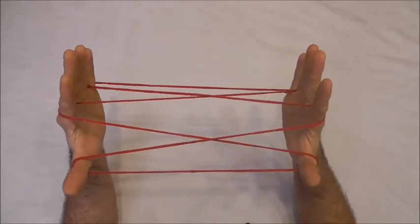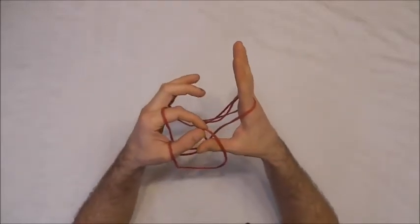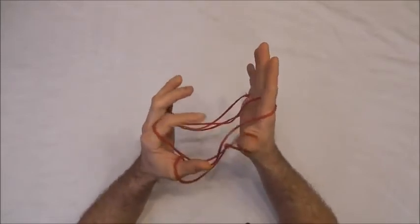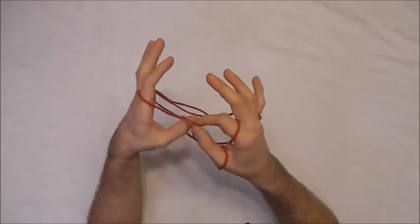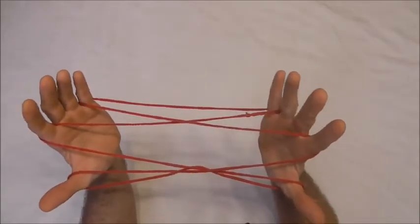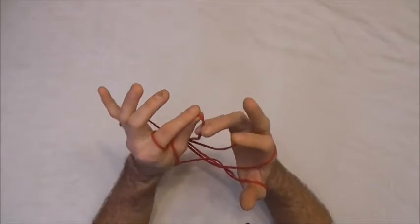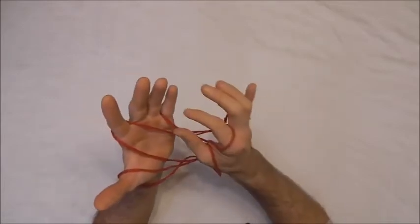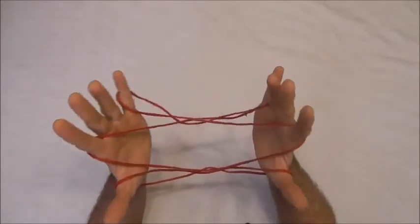Next I want to put a twist in my thumb loops by taking them off my thumb and giving them a full twist towards both hands. And my little fingers I want to give them a full twist away, so I'll grab the near little finger string and place it to the far side twice to give that a full 360 degree twist away on both those little fingers.